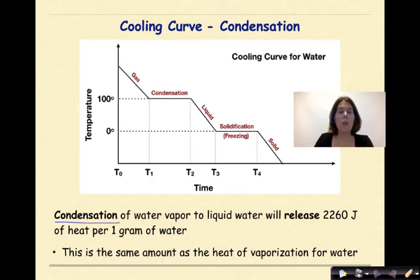Condensation of water vapor to liquid water will release 2260 joules of heat per 1 gram of water. This is the same amount as the heat of vaporization for water that you would find on table B of your reference tables.